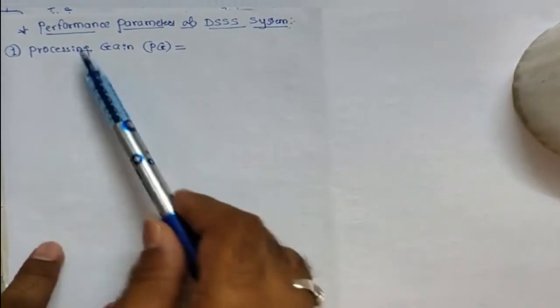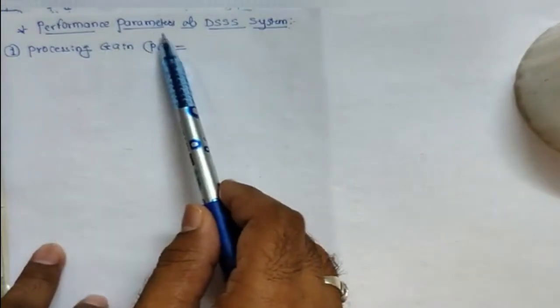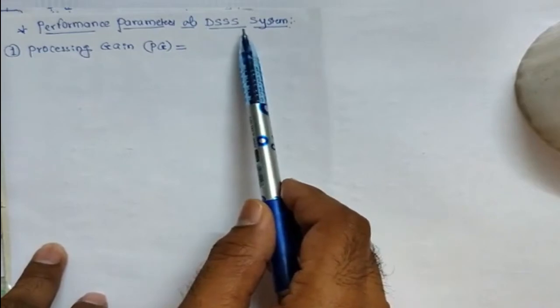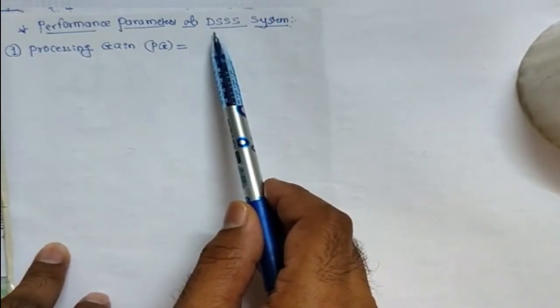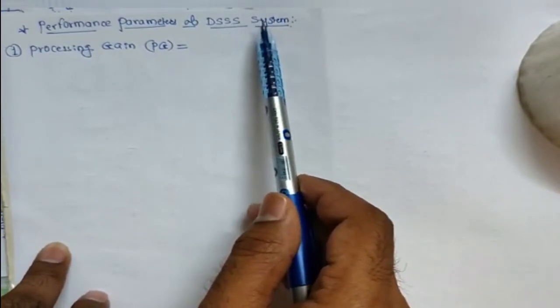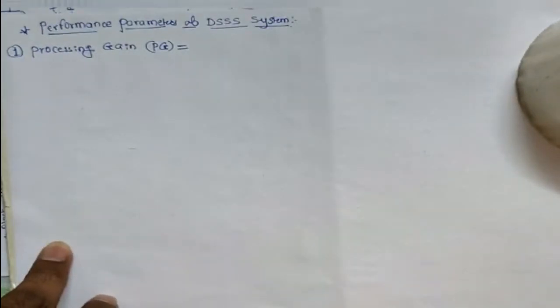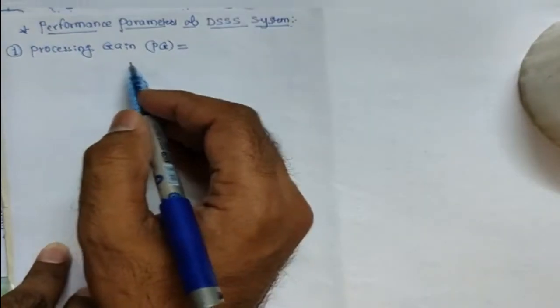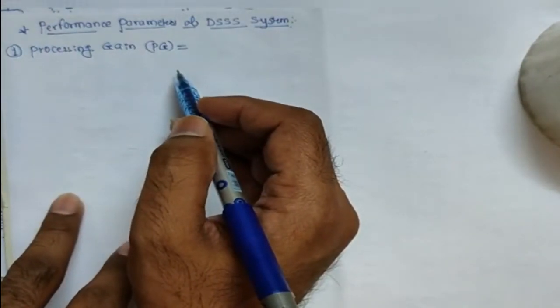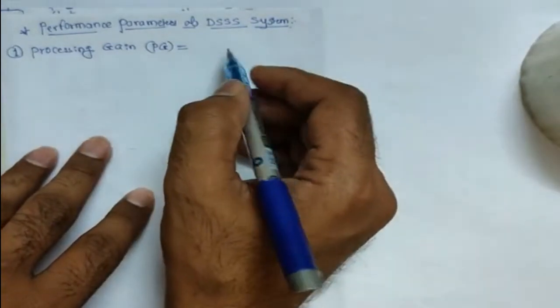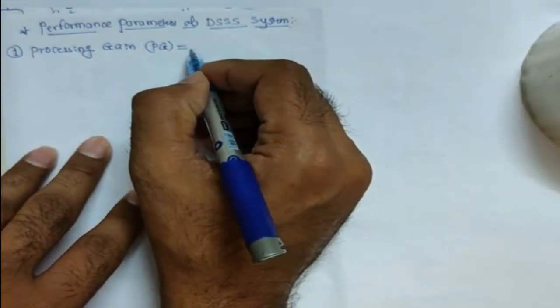Hello everyone. Today we are going to discuss the performance parameters of a DSSS system, that is Direct Sequence Spread Spectrum system. The first parameter is processing gain. How can we define the processing gain? It is defined as the ratio of bandwidth of the spreaded signal to the bandwidth of the unspreaded signal.